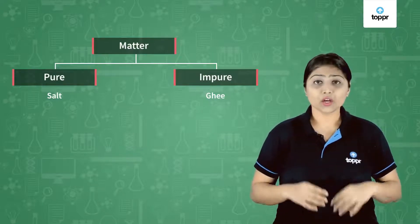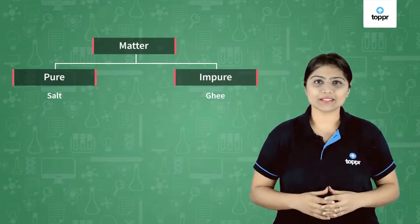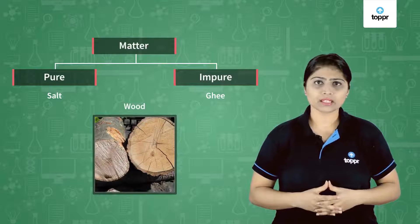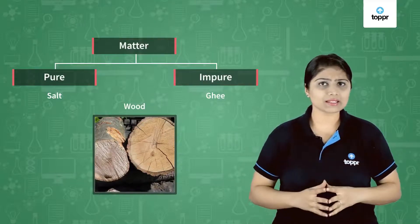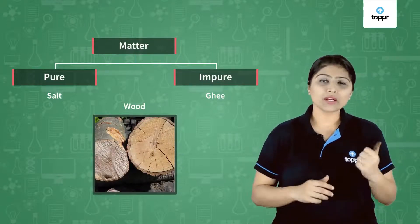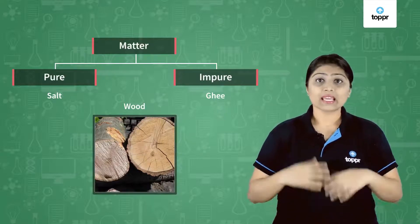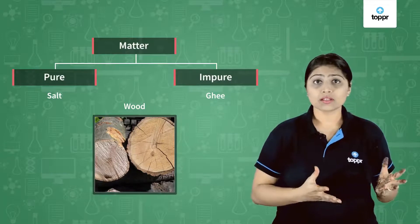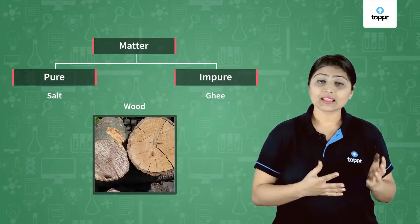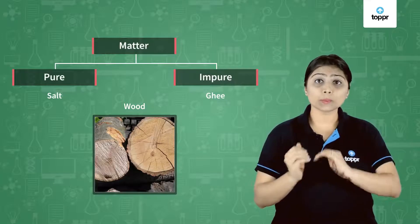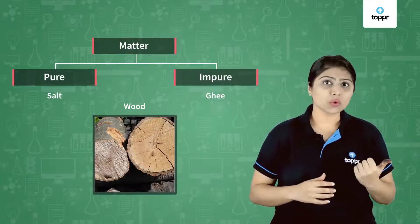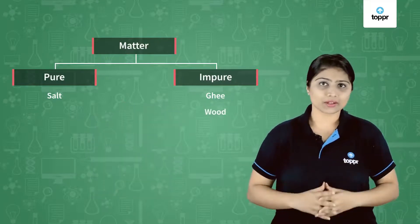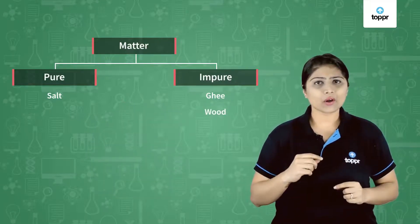Let's take some more examples to understand this concept better. Take the example of wood. What is wood made up of? Is it just made up of wood particles? No. Wood is made up of different kinds of particles — it is made up of cellulose, hemicellulose, water, lignin, and there are many elements present in wood. That means wood is made up of different kinds of particles, so wood is impure.